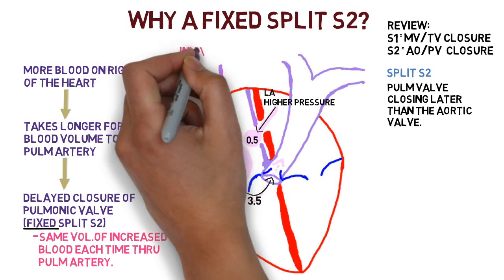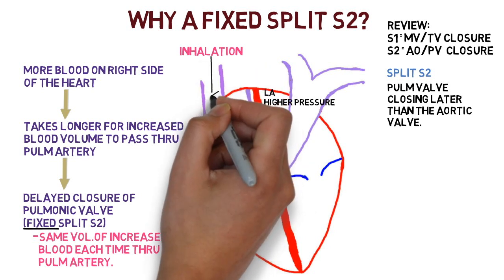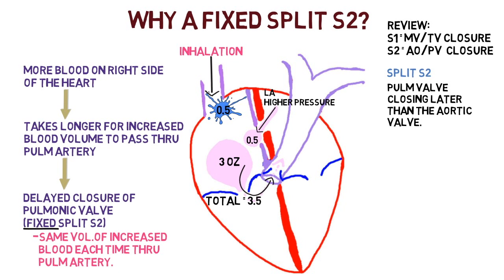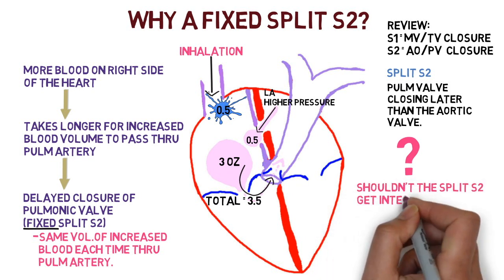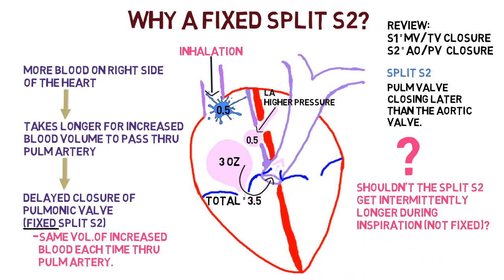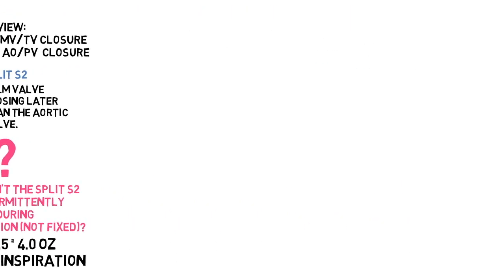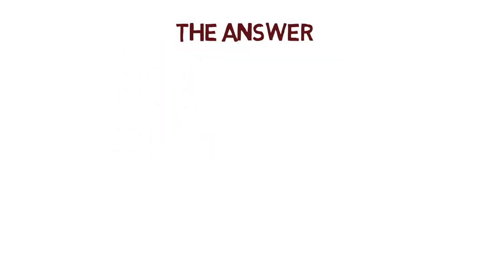We know that inhalation increases venous return — more blood comes in with inhalation. So something doesn't seem right: how can the split be fixed? If more blood enters during inhalation, shouldn't the split S2 get intermittently longer during inspiration rather than staying fixed? The only way it can be fixed is if the same amount of blood crosses through the pulmonary artery during both inhalation and exhalation. During inhalation we'd have 3 + 0.5 + 0.5 = 4 ounces versus 3.5 during exhalation — the split should be longer during inhalation. Something doesn't add up.